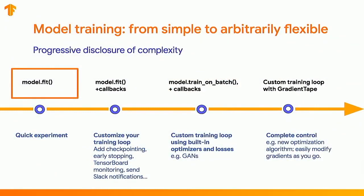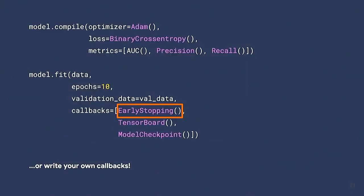I wanted to talk a little bit about training models. There are several ways to train models, and you can use whichever is most helpful for your use case — you don't always need to write a custom training loop from scratch. The first option you might be familiar with from Keras is simply calling model.fit, which doesn't care if you have a sequential, functional, or subclass model — it works for all of them. model.fit is fast, performant, and simple. When you call model.fit in a team, you've reduced your code footprint considerably, which is one less thing your colleagues need to worry about.